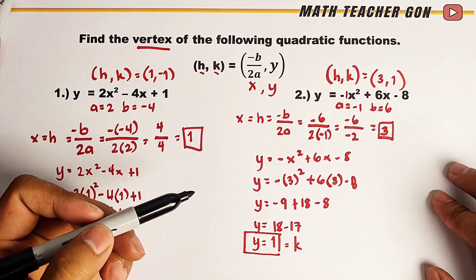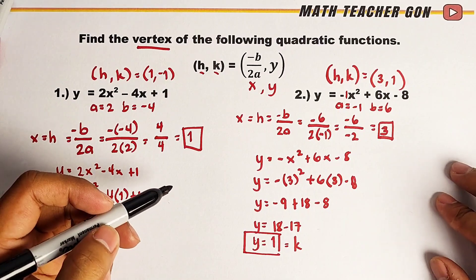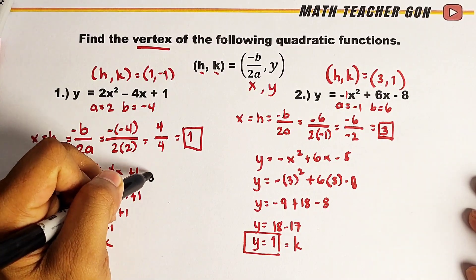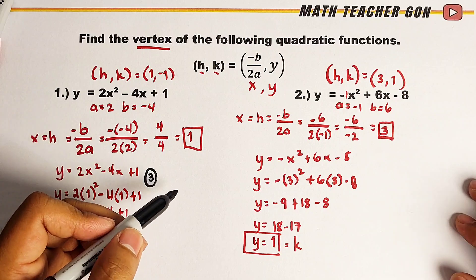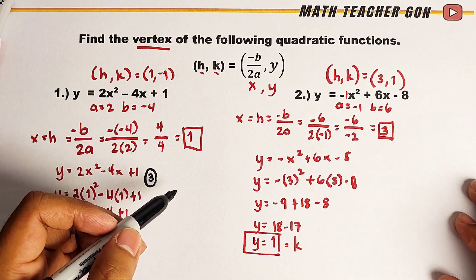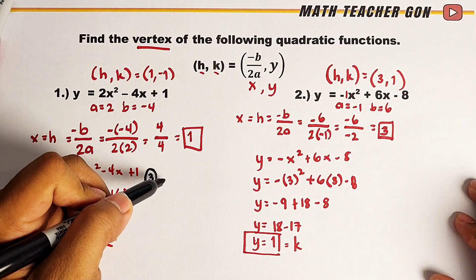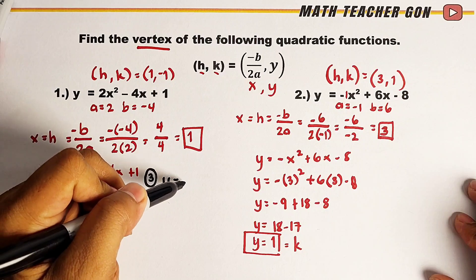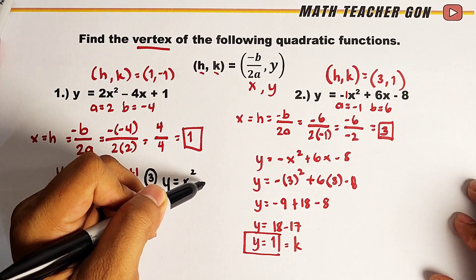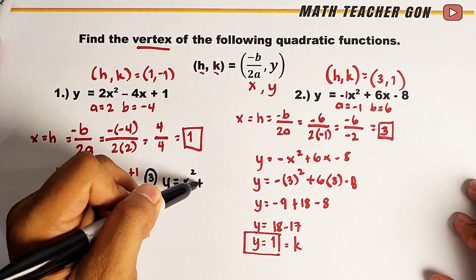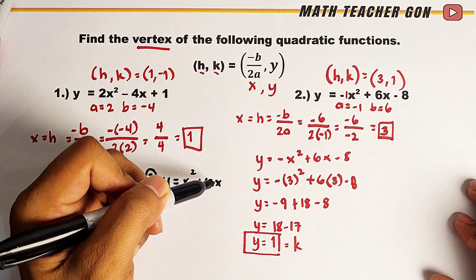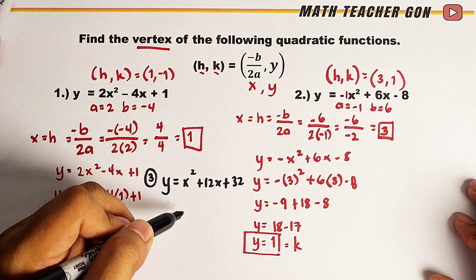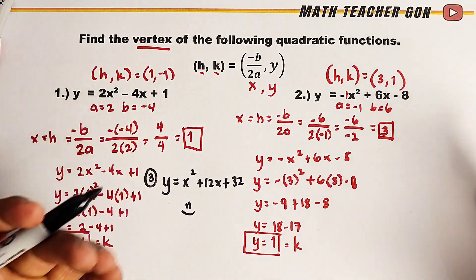As part of our routine, I would give you a third quadratic function. Can you please put in the comment section what the vertex of this function is? y is equal to x squared plus 12x plus 32. Follow for more. Thank you.